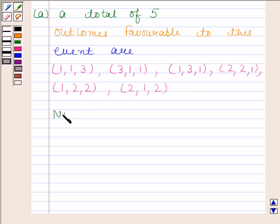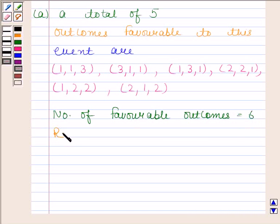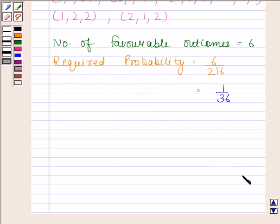So the number of favorable outcomes is equal to 6. Hence our required probability is equal to 6 by 216. And on simplifying this, we get 1 by 36. So this is our answer to the A part.